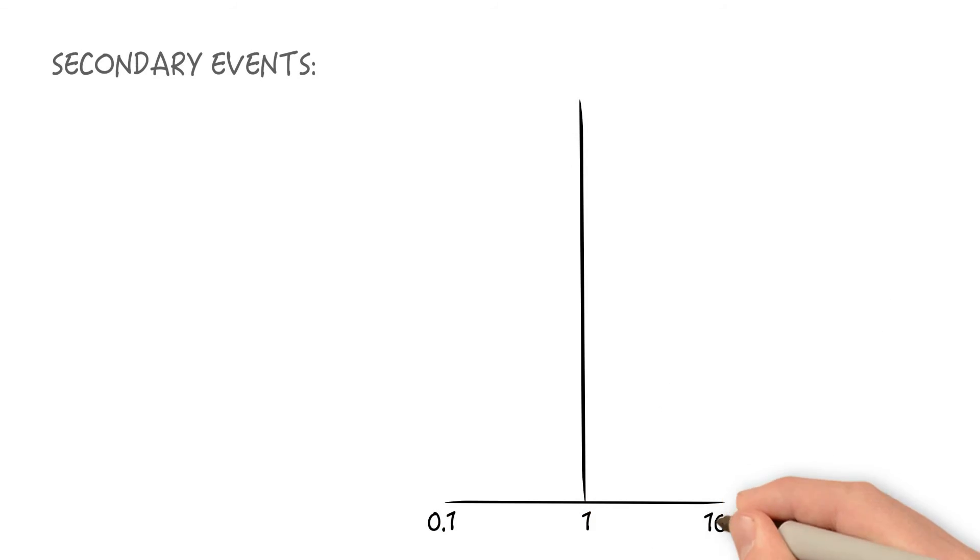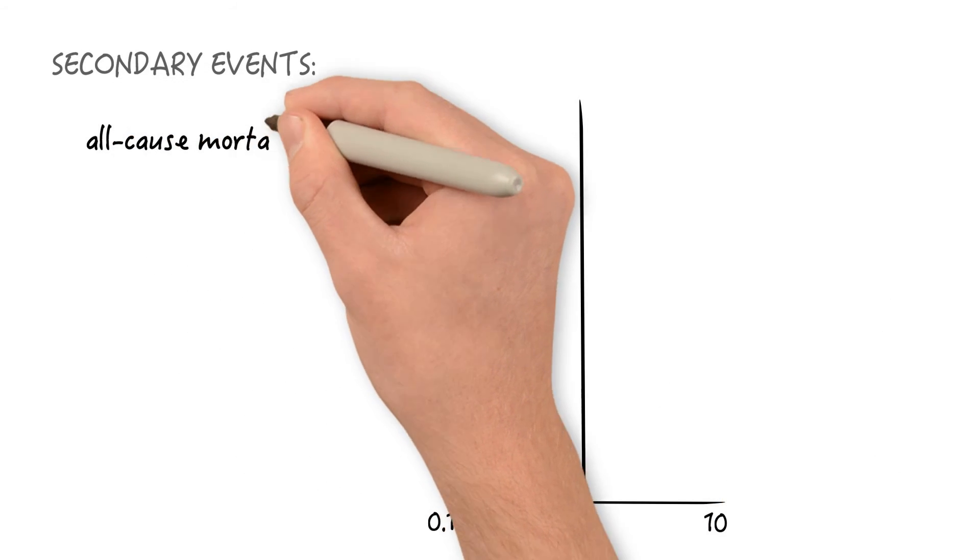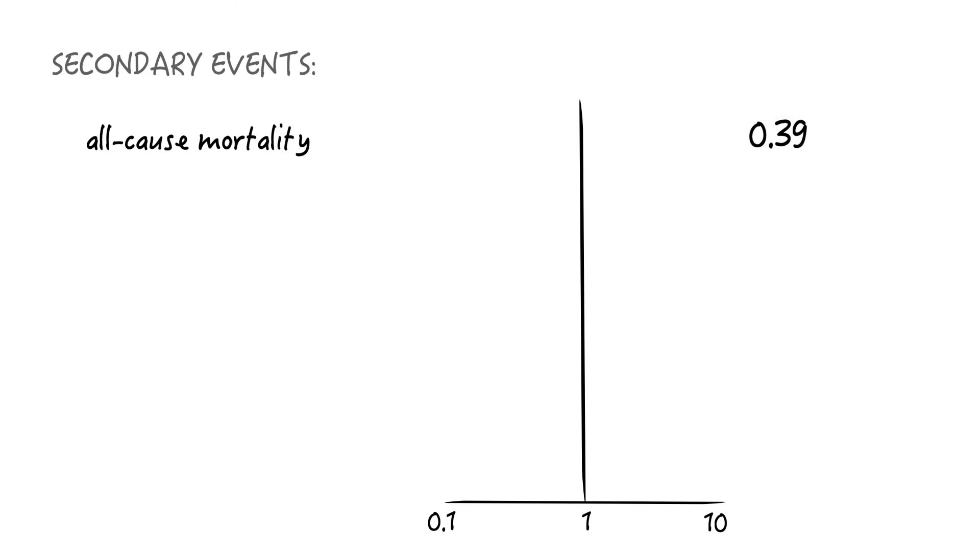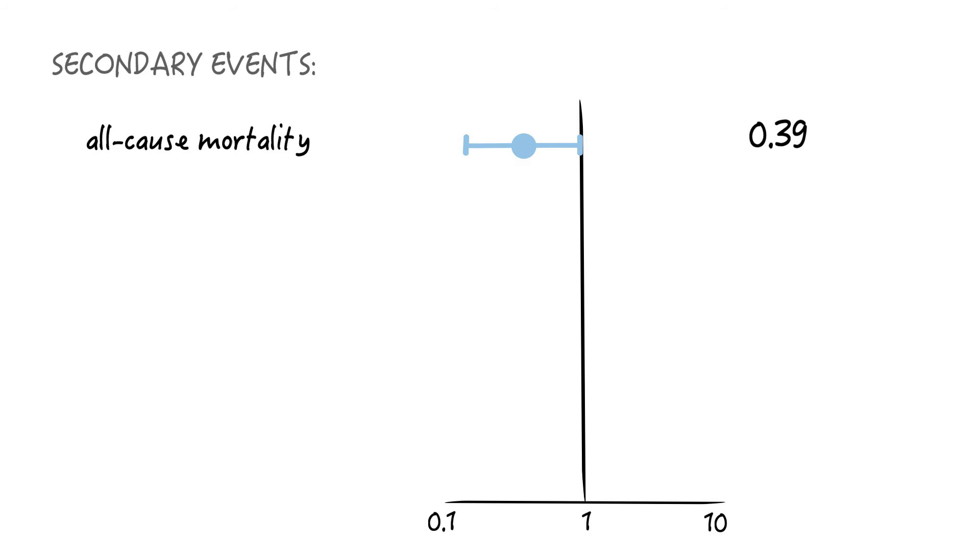And here are the results for that. All-cause mortality had a hazard ratio of 0.39. You see that the confidence intervals do not cross the value of 1, so it's statistically significant. This means that all-cause mortality was less likely in the double therapy group.